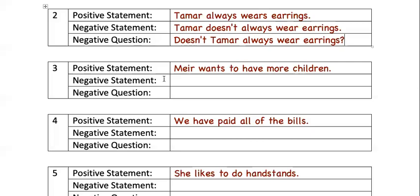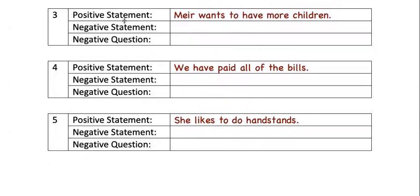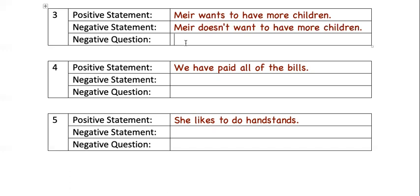Number three: the positive statement is 'Mayor wants to have more children.' The negative statement is 'Mayor doesn't want to have more children.' Because we added 'doesn't,' which has an 's' in it, we don't need it after 'want' anymore. The negative question is: 'Doesn't Mayor want to have more children?'